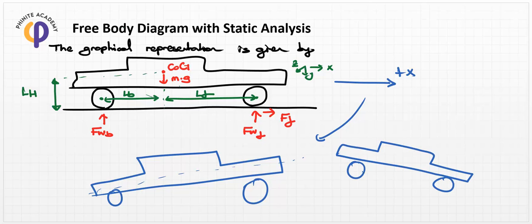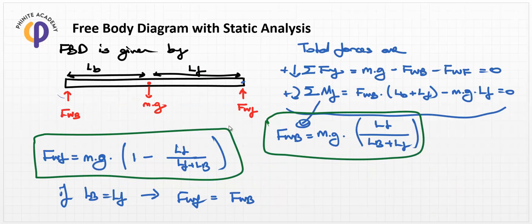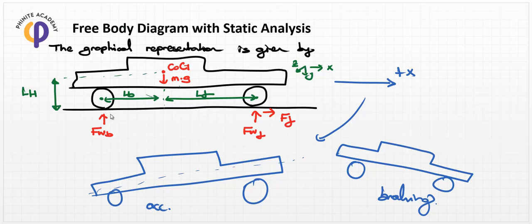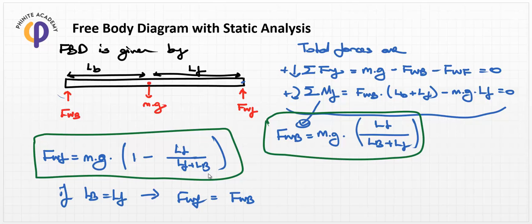In acceleration and braking conditions, as engineers we need to obtain the F wheel back and F wheel front values. The theta value or deflection rate of the wheel bodies comes from these forces, because the suspension system generates force to remove the F wheel front and F wheel back values. In the next lesson we will discuss the dynamic analysis of this car, where the moment value should be included.